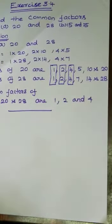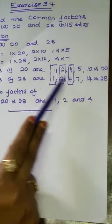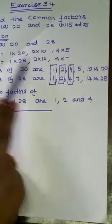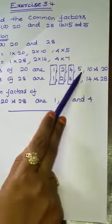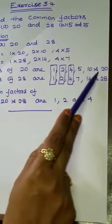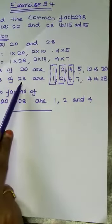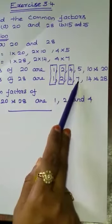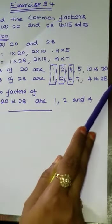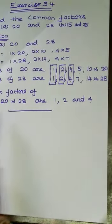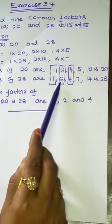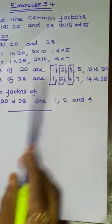To summarize: first calculate the factors of each number, then select the common values. The factors of 20 are 1, 2, 4, 5, 10, and 20. The factors of 28 are 1, 2, 4, 7, 14, and 28. The common factors are 1, 2, and 4.